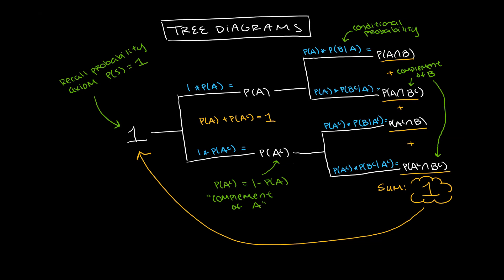When constructing tree diagrams, remember to check if the events are independent or dependent. Remember, if they are independent, then the probability of B given event A is just equal to the probability of B.